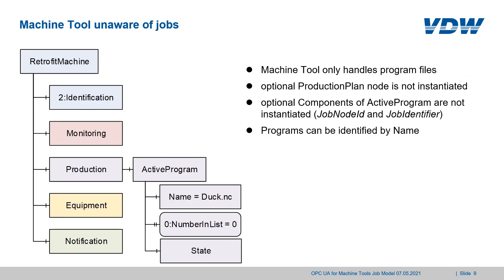Now we can move on to the examples. The first example is the easiest: a machine tool that doesn't handle jobs at all, only programs — called the Retrofit Machine. As it doesn't handle job nodes, the production plan node is not instantiated. The optional components of the active program, job node ID and job identifier, are also not instantiated as there is no job they could relate to. Programs can be identified by name; in this example the program name is duck.nc. The number in list is zero, as the active program is always used as a single program.